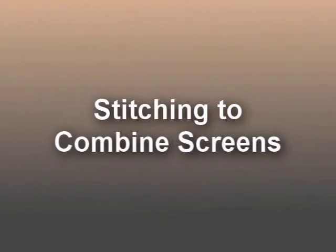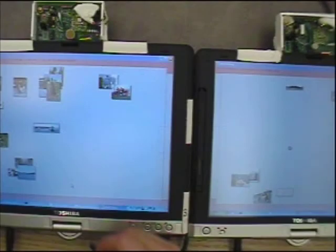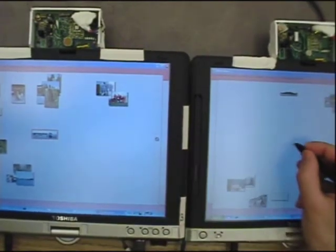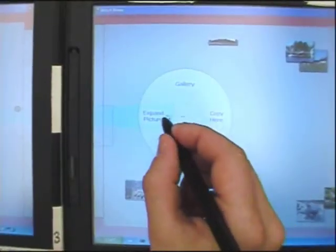In addition to sharing images, stitching can be used to combine devices in other ways. For example, we can dynamically combine the screens of two separate devices by selecting an image, stitching to the other screen, and then choosing Expand from the menu that appears.